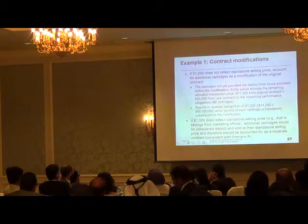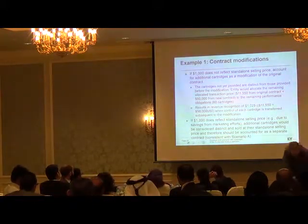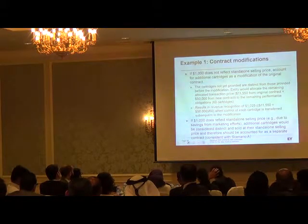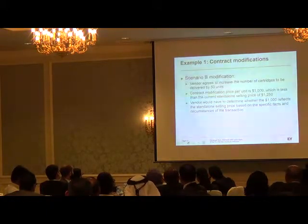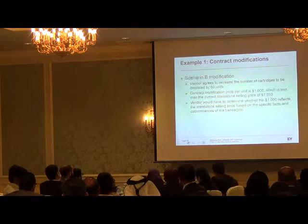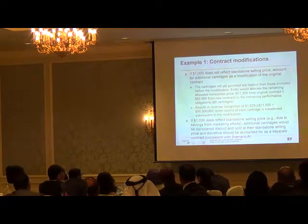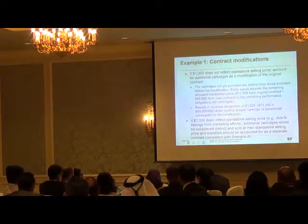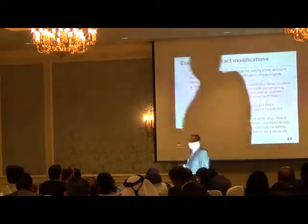Since it's distinct, what do you need to do? Terminate the old one and make a new one. How do we allocate the remaining transaction price? The 11,500 from the original contract — these are the still-not-provided ones. 40 were already provided, the rest were not. Plus the 50,000 from the new contract to the remaining performance obligation, which is 60. The resulting revenue recognition is 1,025 when the control of each category is transferred subsequent to the modification.